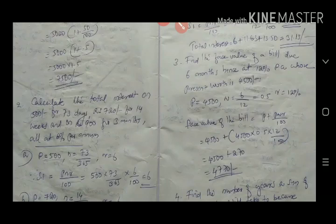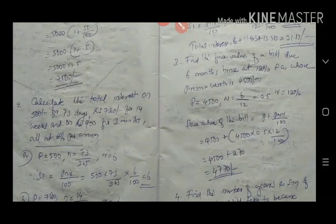Hi dear students. In the previous class we worked out one problem. Now we are moving to some harder problems in connection with simple interest. Please notice the second problem on the screen — calculate the total interest on rupees 500 for 73 days, rupees 720 for 14 weeks, and rupees 900 for three months, all at six percent per annum.